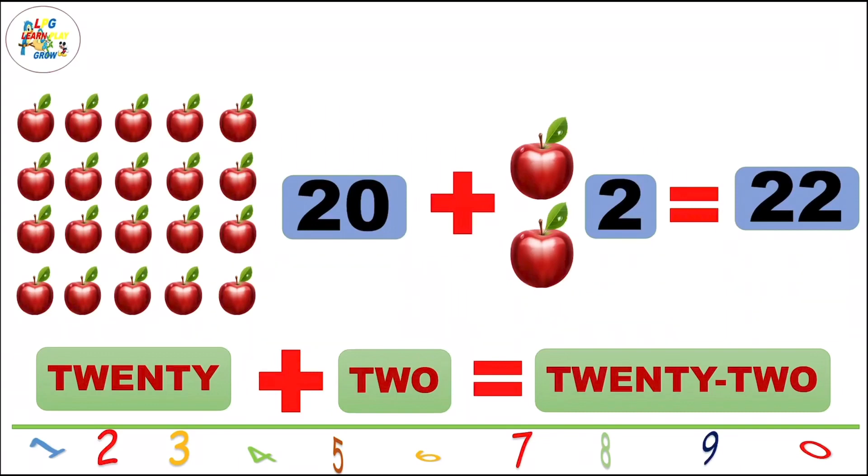20 plus 2 is equal to 22. Learn the spelling: T-W-E-N-T-Y, twenty, T-W-O, two. Once more: T-W-E-N-T-Y, twenty, T-W-O, two.